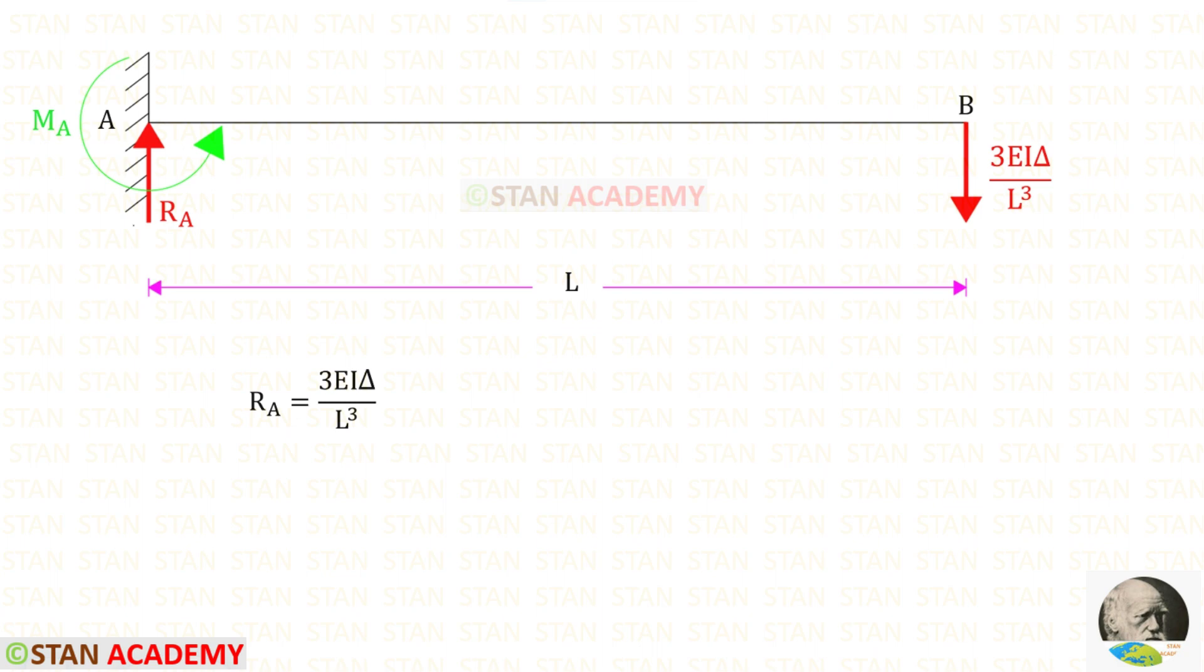Now let us find ra. We know that in this beam there is no load, so the values of rb and ra will be same. Only the difference is that rb is acting downwards, so ra should be acting upwards.